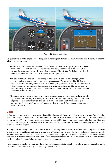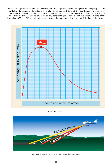Since glides are usually performed relatively close to the ground, accuracy of their execution and the formation of proper technique and habits are of special importance. The glide ratio of an airplane is the distance the airplane travels in relation to the altitude it loses. For example, if an airplane travels 10,000 feet forward while descending 1,000 feet, its glide ratio is 10 to 1. The best glide airspeed is used to maximize the distance flown — this airspeed is important when a pilot is attempting to fly during an engine failure. The best airspeed for gliding occurs at the highest lift-to-drag ratio (L/D). When gliding at airspeed above or below the best glide airspeed, drag increases. Any change in the gliding airspeed results in a proportional change in the distance flown.